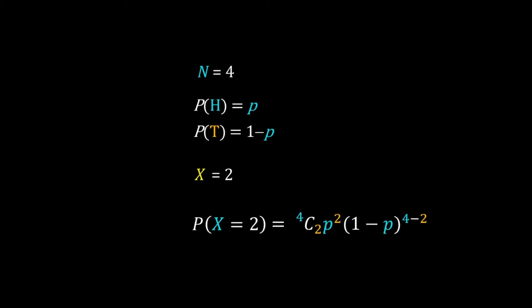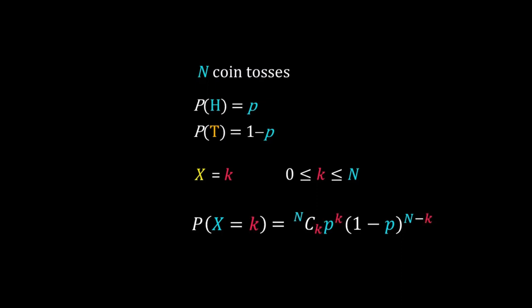Now let's generalize this problem. The number of tosses is n, the probability of head is p, and the number of heads is k. The probability of having k heads in n tosses is equal to n-choose-k times p to the power k times (1 minus p) to the power (n minus k).